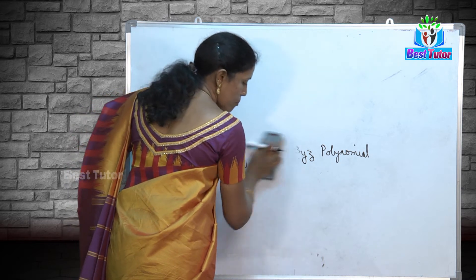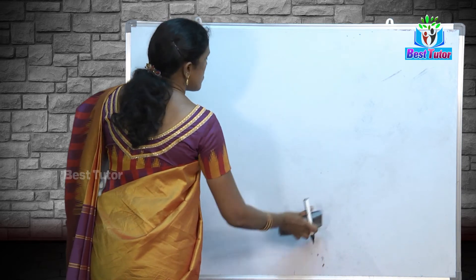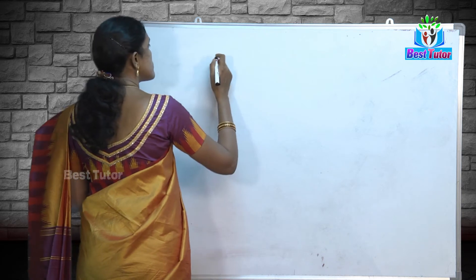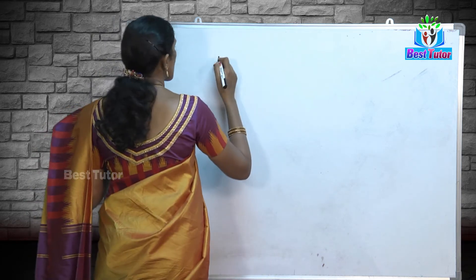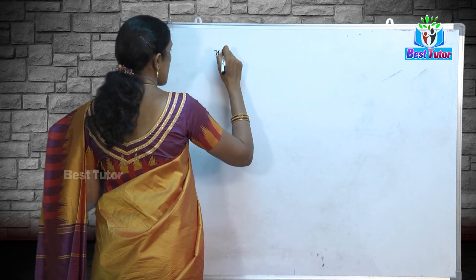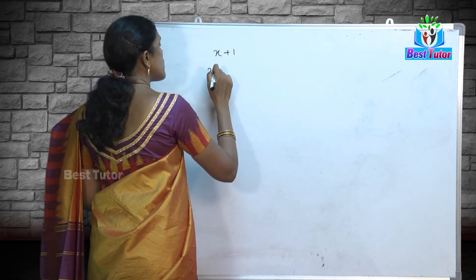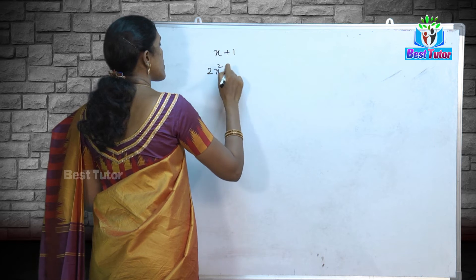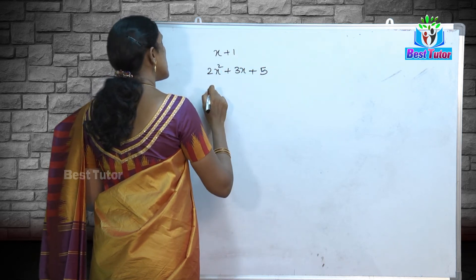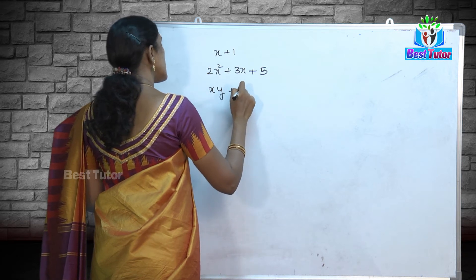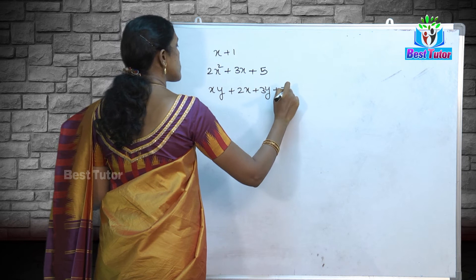Once we have learned about monomial, binomial, trinomial, multinomial, and polynomial, we will learn about the degree of a polynomial — linear polynomial, quadratic polynomial, and more. I will give you examples first: x + 1, then 2x² + 3x + 5, then xy + 2x + 3y + z.